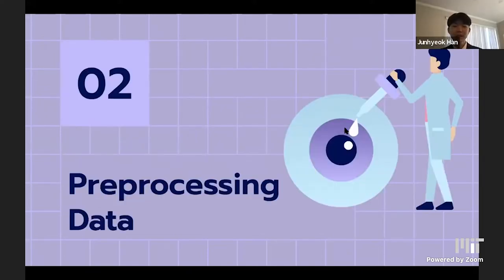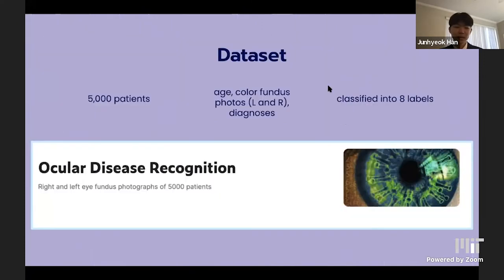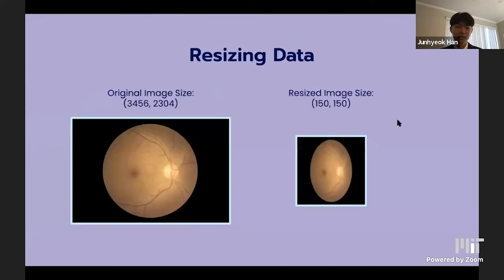Now we'll cover how we pre-processed our data. The ODIR dataset — Ocular Disease Intelligent Recognition — is a structured database of 5,000 patients with age, color fundus photographs from left and right eyes, and doctor diagnostic keywords, classified into eight labels. Because of our large dataset, we had to resize all optical fundus images to be considerably smaller and the same dimensions to quicken runtime.